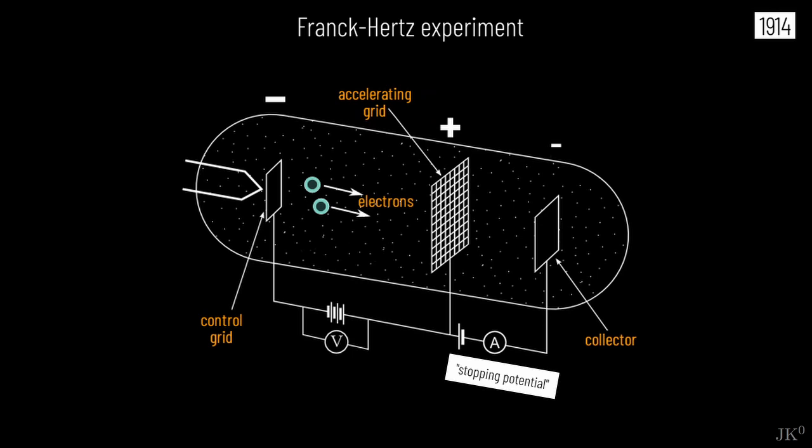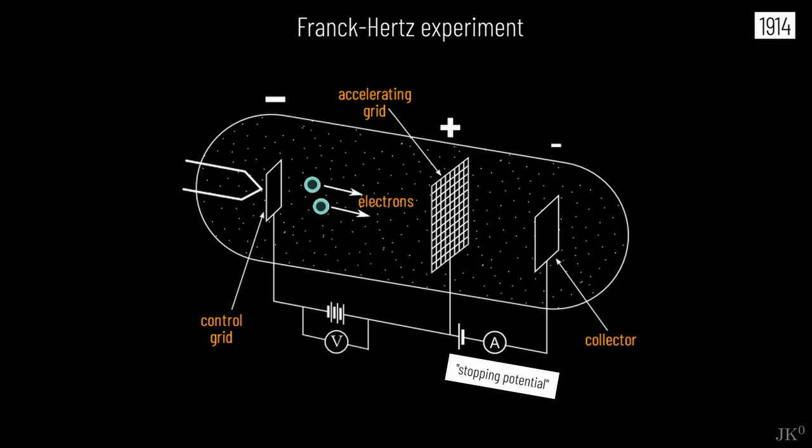So what is really happening in the Franck-Hertz experiment? Bohr's atomic model solves the mystery. When the electrons in the tube are accelerated by less than 4.9 volts, they cannot transfer energy to the atom and they undergo elastic collisions as expected, reaching the collector as if the mercury atoms were not there.